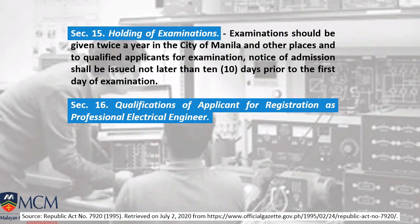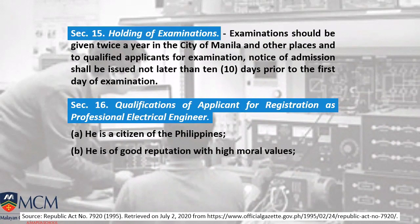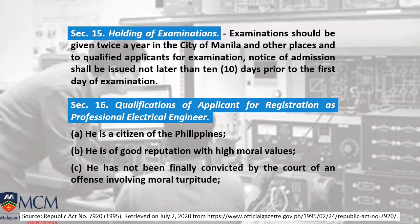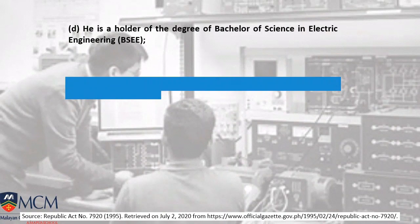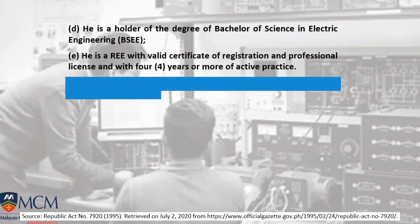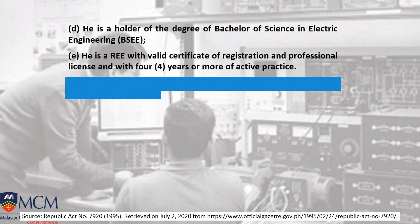Section 16 covers qualifications of applicants for registration as PEE. If you are dreaming to be a Professional Electrical Engineer, you must be a citizen of the Philippines with good reputation and high moral values with no illegal activities or illegal records, and not finally convicted by the court of an offense involving moral turpitude. You must be a holder of a Bachelor of Science in Electrical Engineering degree with 4 years or more of active practice, though this is still questionable as some PEEs are limiting it. Registered Electrical Engineers with 4 years of experience applying for PEE is still a topic of discussion in some national conventions.